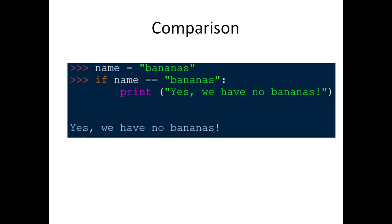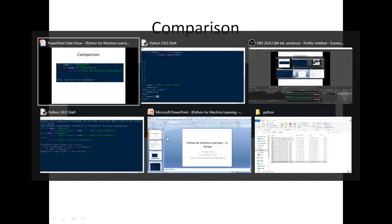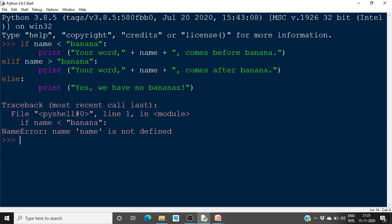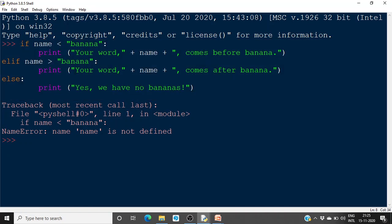We can also do comparison using the comparison operator on strings. For example, if name equals 'bananas' and we check if name == 'bananas', we print 'yes we have no bananas'.